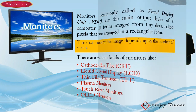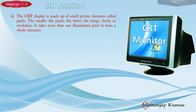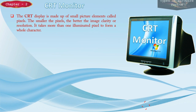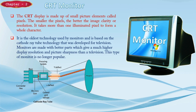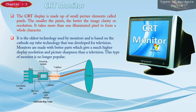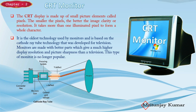CRT monitors are made up of small picture elements called pixels. The smaller the pixel, the better the image clarity and resolution. It takes more than one illuminated pixel to form a whole character. CRT monitors are one of the oldest technologies used by monitors and are based on cathode ray tube technology developed for television. They offer higher display resolution and picture sharpness than television, but are no longer popular.